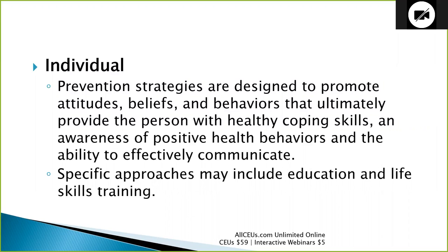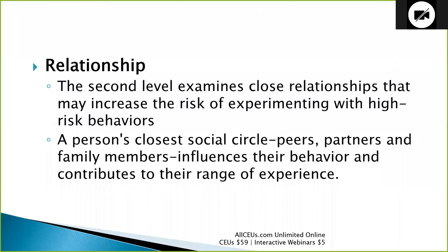The second level examines close relationships that may increase the risk of experimenting with high-risk behaviors — peers, family, and neighbors. A person's closest social circle influences their behavior and range of experiences. We want to look at what peers, partners, and family members are modeling, what they're explicitly teaching, and what they're striving to achieve in their lives.